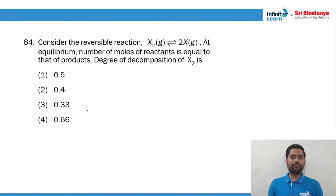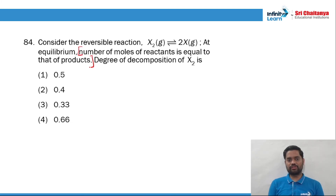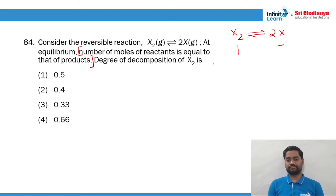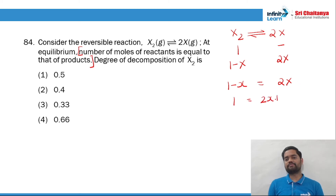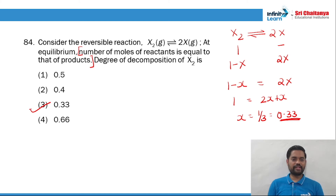Question 84: for a reversible reaction at equilibrium, the number of moles of reactant equals the number of moles of product. X2 ⇌ 2X. Initially: X2 = 1, X = 0. At equilibrium: X2 = 1−α, X = 2α. Number of moles of reactant equals product: 1−α = 2α, so 1 = 3α, giving α = 1/3 = 0.33. Option 3 is the right answer for question 84.